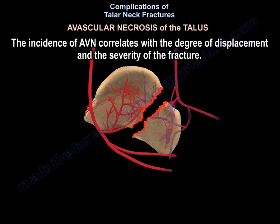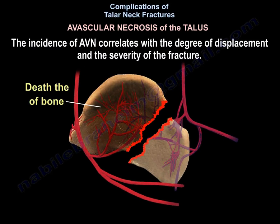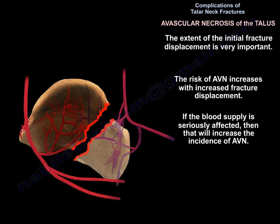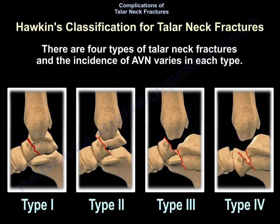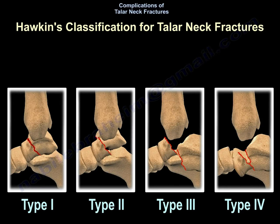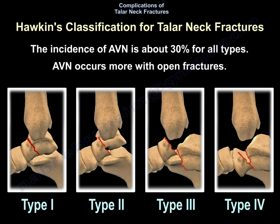The incidence of AVN correlates with the degree of displacement and the severity of the fracture. The extent of the initial fracture displacement is very important — the risk of AVN increases with increased fracture displacement. If the blood supply is seriously affected, that will increase the incidence of AVN. The overall incidence of avascular necrosis is about 30% for all types, and AVN occurs more with open fractures.